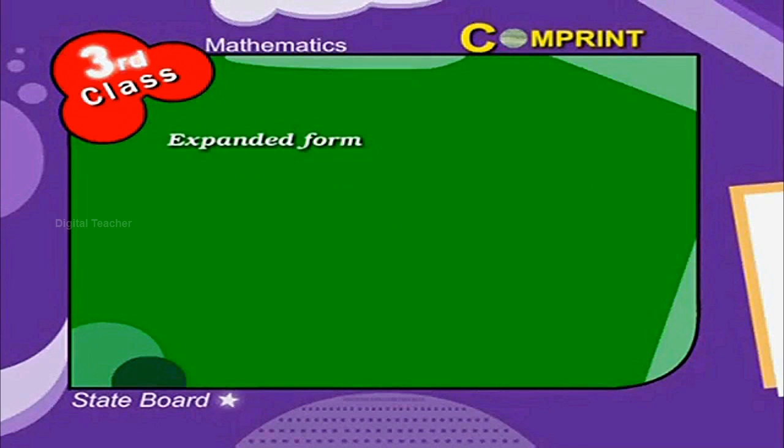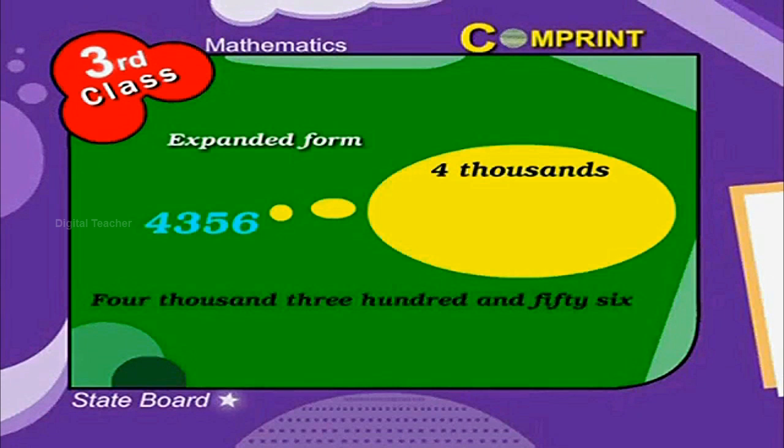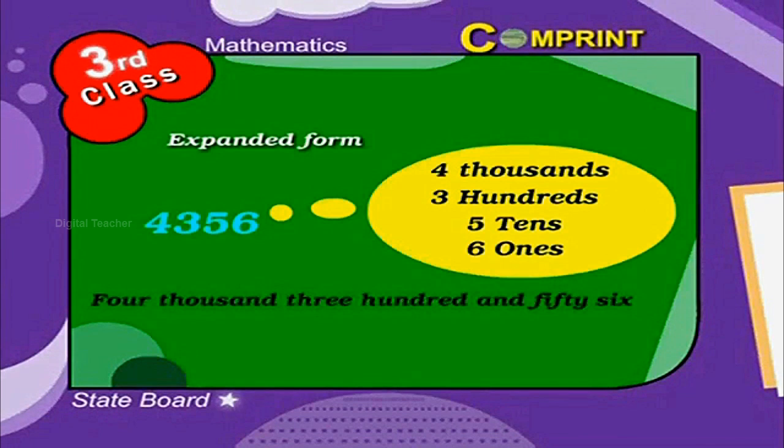For example, 4356. We get 4 thousands, 3 hundreds, 5 tens, and 6 ones.